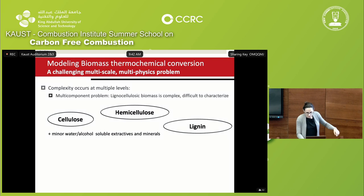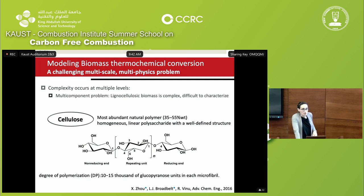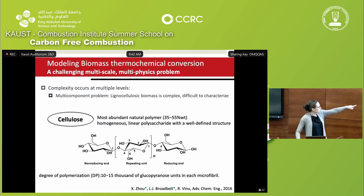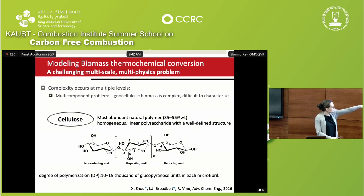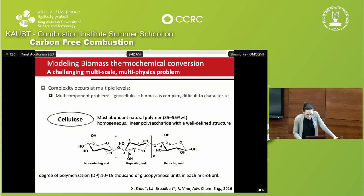Let's start with cellulose — the most present component in biomass at 35 to 55 weight percent. It's homogeneous in the sense that it has one unit that repeats: it's a linear polysaccharide with a well-defined structure. It's very long chains — the degree of polymerization is about 10,000 to 15,000 units in what we call the microfiber of cellulose. What should immediately jump out is the fact that it's full of oxygen.